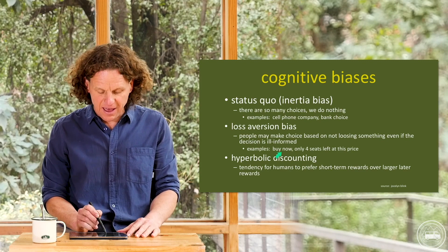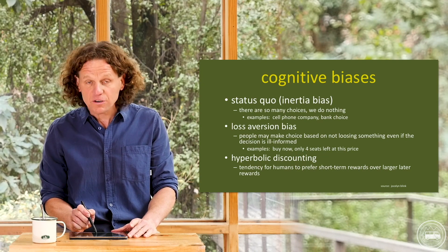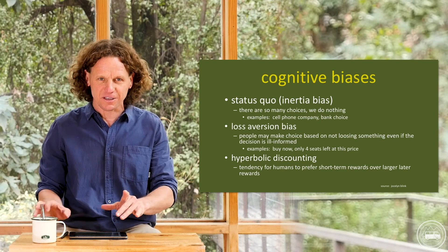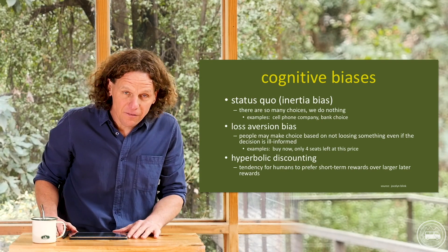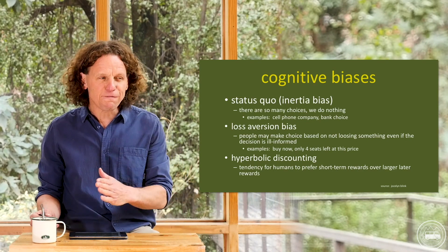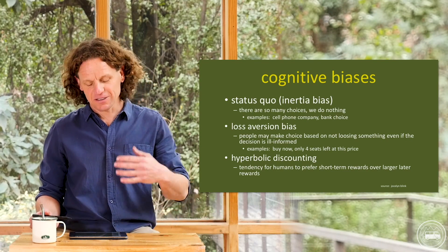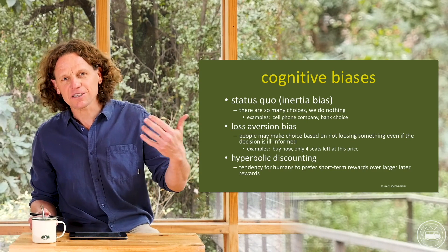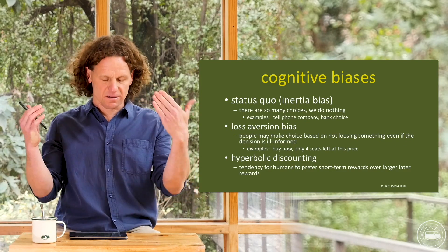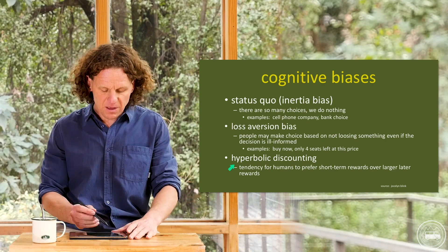Loss aversion bias — people make choices based on not losing something, even if the decision is ill-informed. Have you ever seen something like Travelocity saying 'only four seats left at this price'? All of a sudden you feel like you're going to lose out and you buy immediately. But they may well open up more seats at that same price later. When we feel we're about to lose something, we're biased toward buying. They're playing on our psychology, which impacts our decision-making — running against the idea of rational consumer behavior in the neoclassical model.